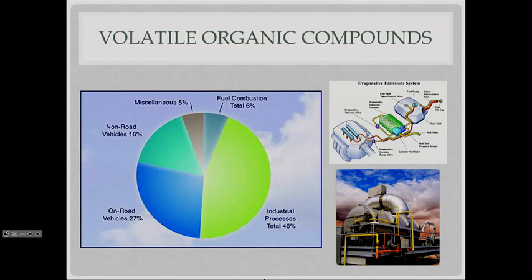That's an example of a volatile organic compound. We have many ways that we produce these, but primarily they're from the combustion of fuel and our industrial and vehicle processes.